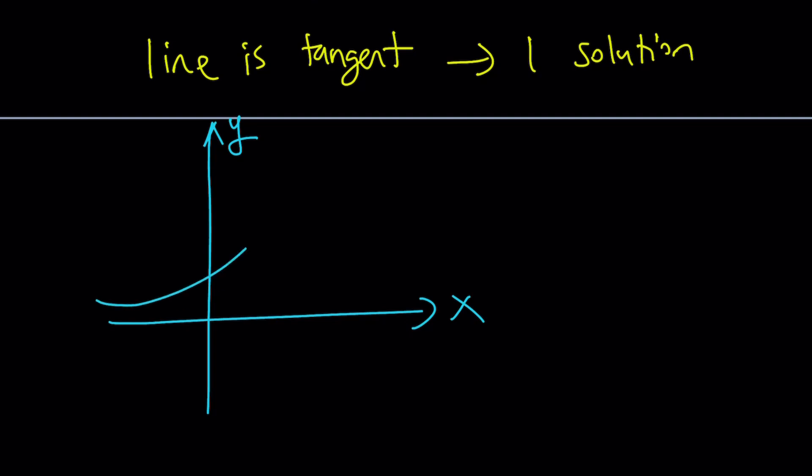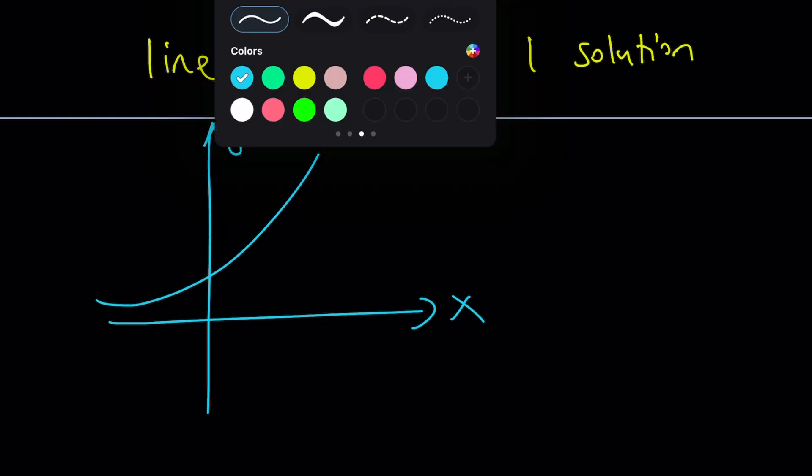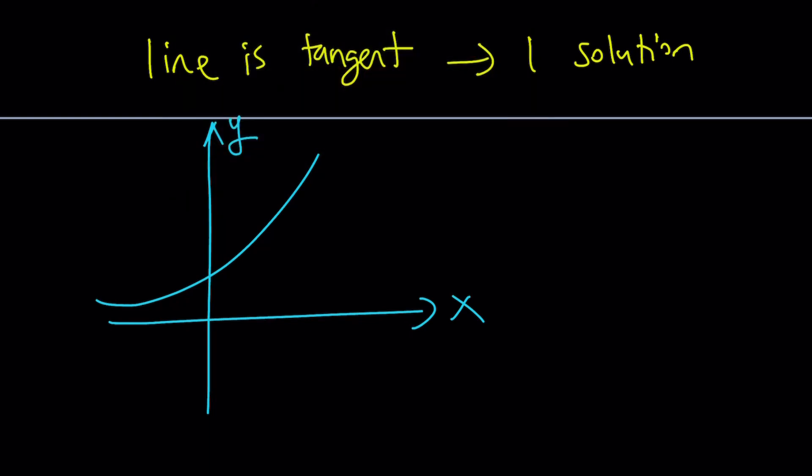So suppose we have our y equals 2 to the x. And then at some point, we don't know which one, but at a single point, our line is going to have a single, I don't know, something like this maybe. I'll try to make it that way. Our line is going to be tangent. So we don't know that point, but it's going to happen. We know that at least intuitively, right? Hopefully.